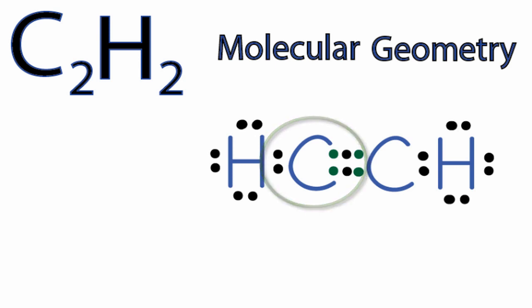So we have two things attached to it. We have the hydrogen, and then we have the other carbon. There are no lone pair electrons, so we only have two things on that carbon.